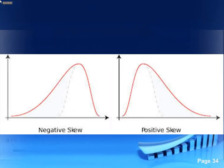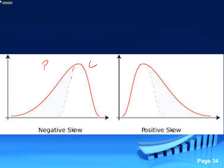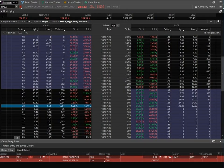One thing to note about skew: a negative skew means the puts that are equidistant from the underlying have more premium than the calls. A positive skew means the call side has a longer tail — a little more premium jacked into them. This is why I took a screenshot before the market closed — to show you this example with that skew context, and why we'd be selling as close to that 36 Delta.